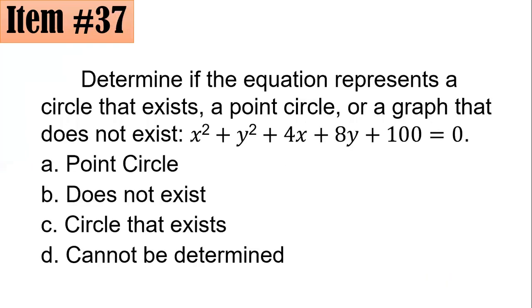Item 37. Determine if the equation represents a circle that exists, a point circle, or a graph that does not exist. x² + y² + 4x + 8y + 100 = 0. Is it a point circle, does not exist, a circle that exists, or cannot be determined?